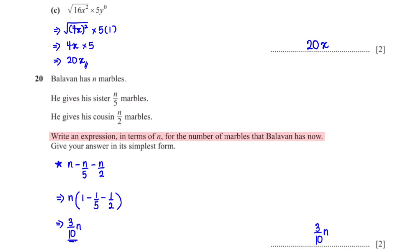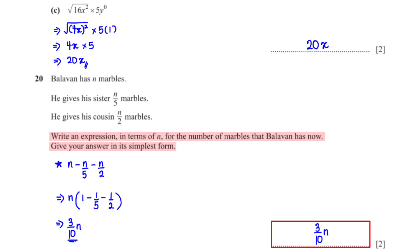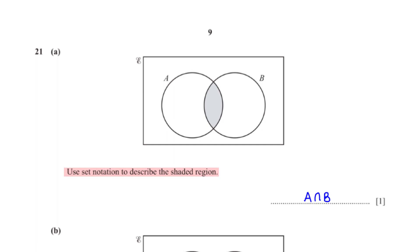Write an expression in terms of n for the number of marbles Balavan has now, in simplest form. He started with n marbles and gave n/5 to his sister and n/2 to his cousin. So he has n − n/5 − n/2 = n(1 − 1/5 − 1/2) = n × 3/10 = 3n/10.